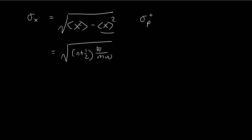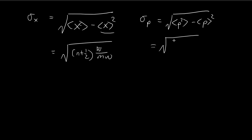We do the same thing for the standard deviation of momentum: the square root of the expected value of p squared minus the expected value of p, squared. Using the result from last time, the expected value of p squared equals n plus one-half times h-bar m omega. The expected value of p is also zero, so we can ignore that term.